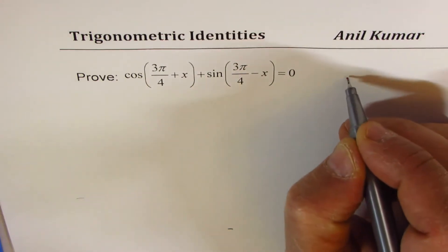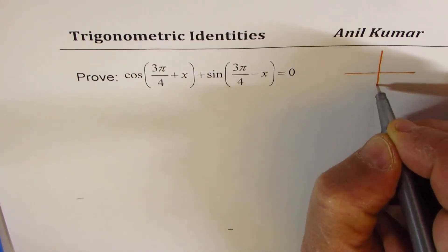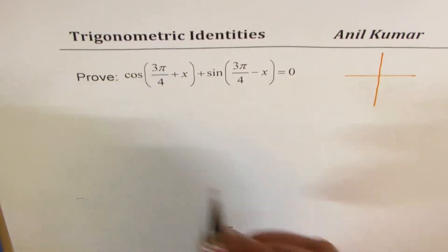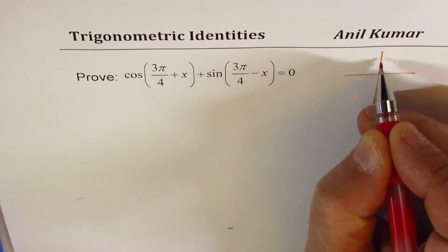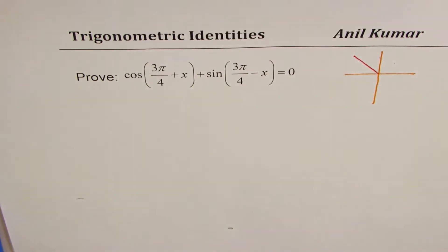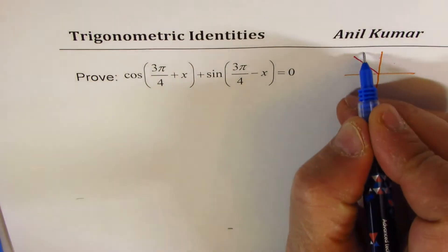Let's look into the angle 3π/4 first - where it lies and how to solve this particular equation. When we say 3π/4, we know this is 1π/4, 2π/4, so we're talking about the terminal arm being in quadrant 2.